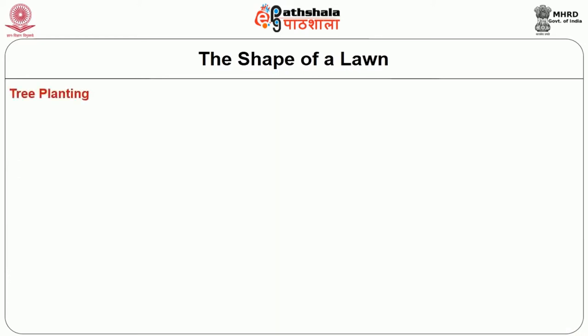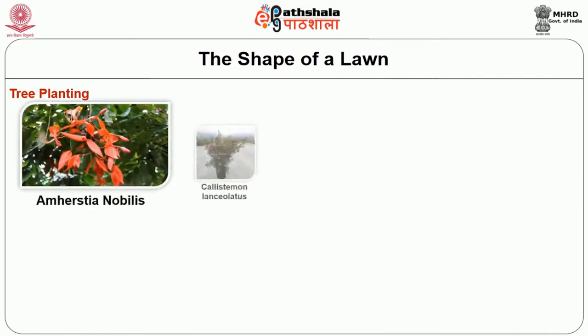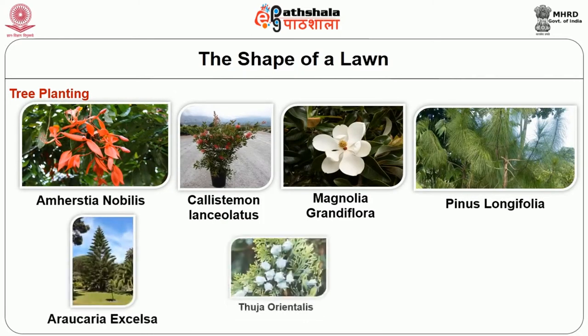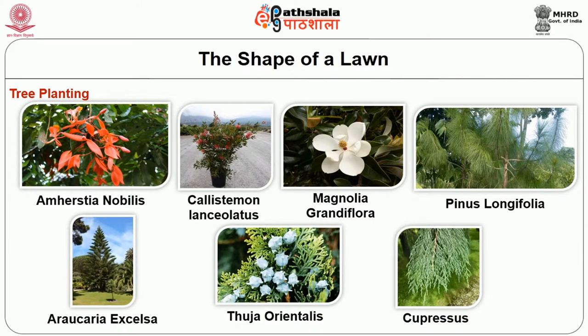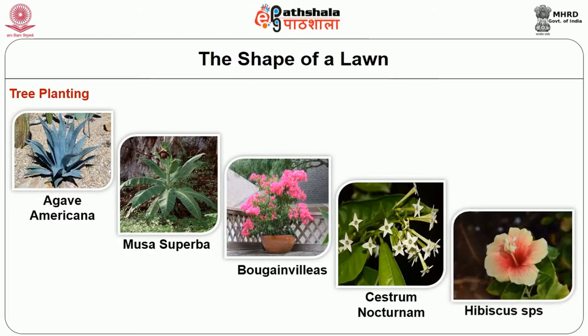Then we will see tree planting. In lawns, grasses alone are established to add extra beauty to the area. Such lawns are called monotonous lawns. To increase the beauty of spacious lawns, beautiful trees and shrubs are planted as single specimens. Important trees grown in lawns to break monotony include Ameridis nobilis, Callistemon lanceolatus, Magnolia grandiflora, Pinus longifolia, Araucaria excelsa, Thuja orientalis, etc. Common shrubs used include Agave americana, Musa superba, Bougainvillea, Cestrum nocturnum, Hibiscus species, etc.